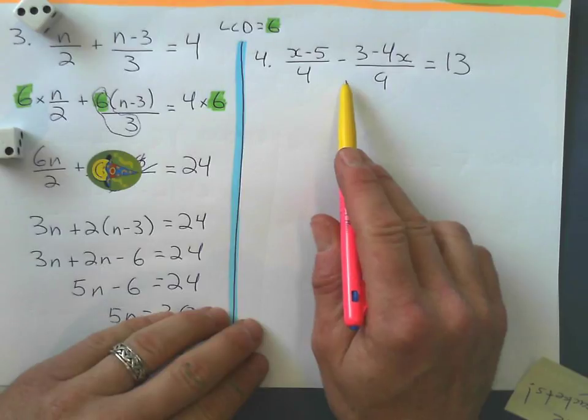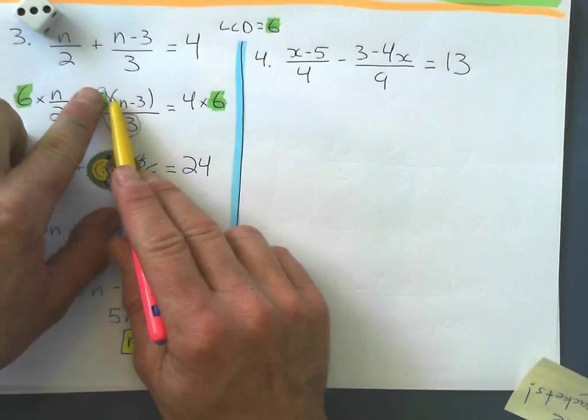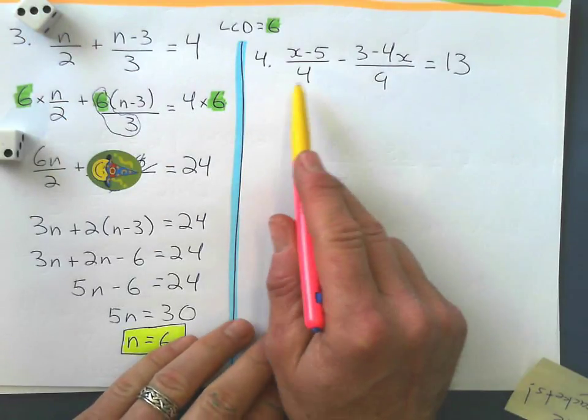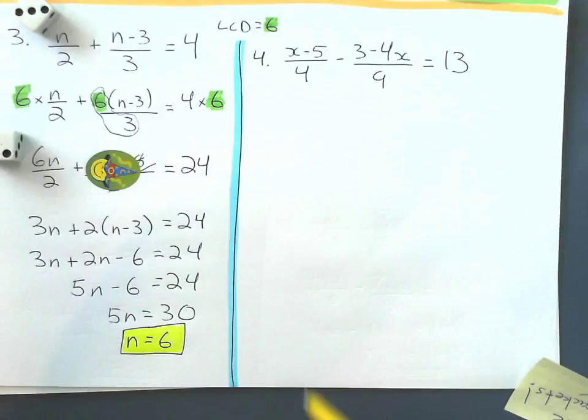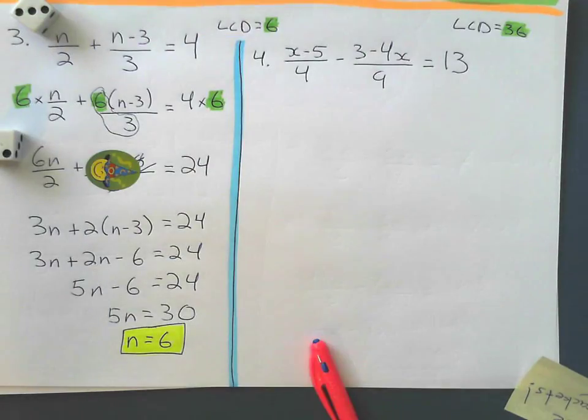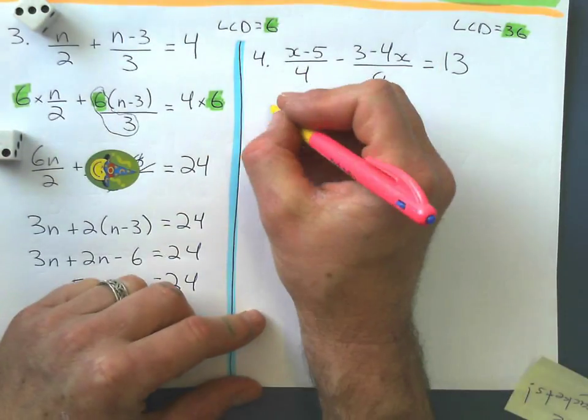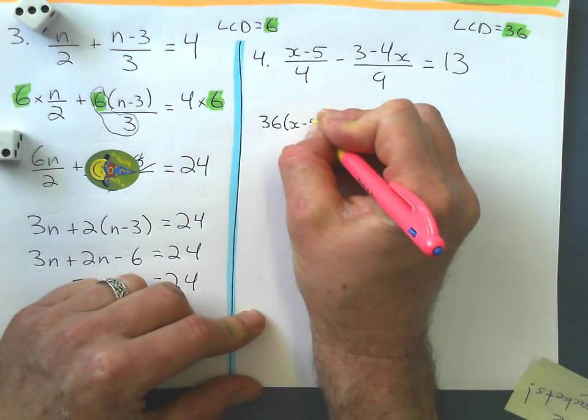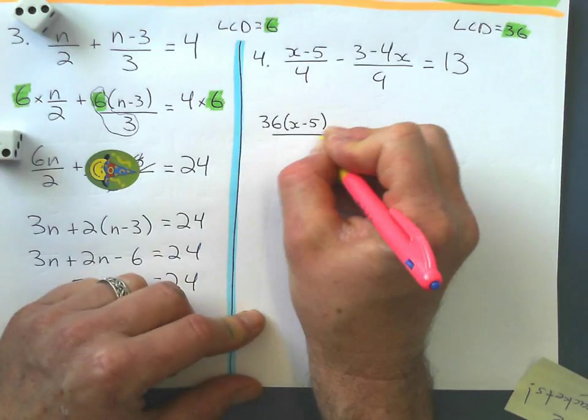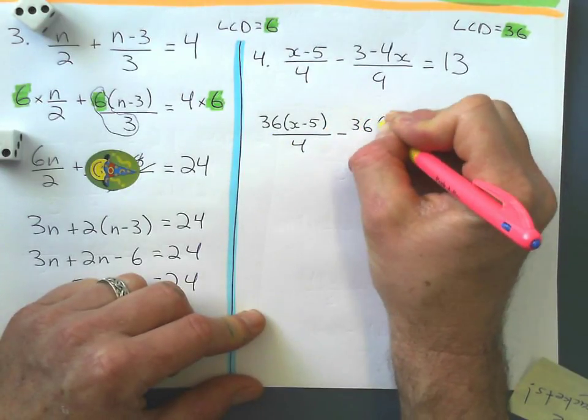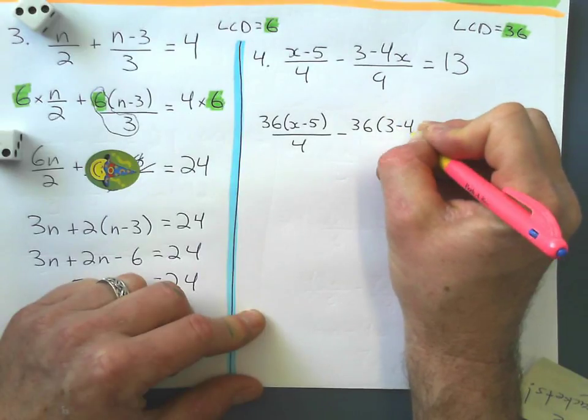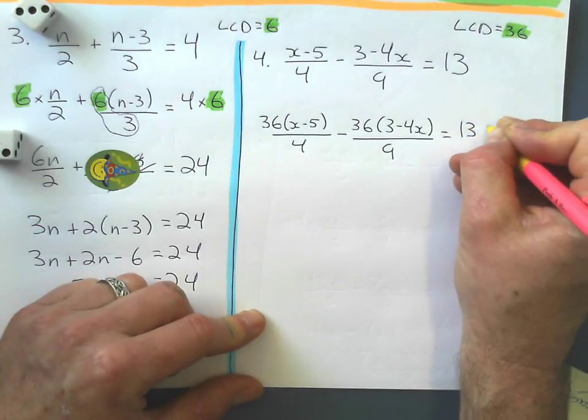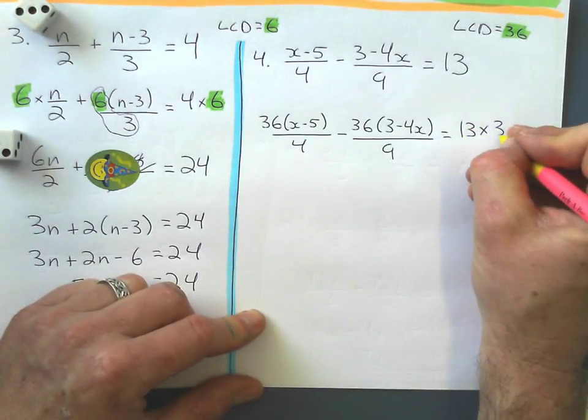Okay, let's try one more. And this one looks really hard, and I won't make that mistake. So, I'm not going to expand that first. I'm going to simplify it first. So, 9 and 4. What's the least common denominator? 36. Now, I multiply everything by 36. Remember, I've got to use brackets now. 36 times brackets x minus 5 over 4 minus 36 brackets 3 minus 4x over 9 equals 13. Don't forget to multiply that by 36 as well.